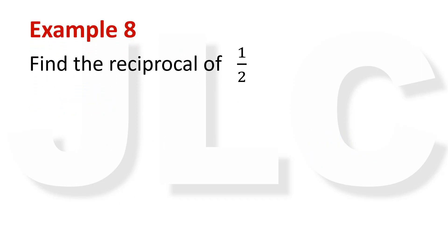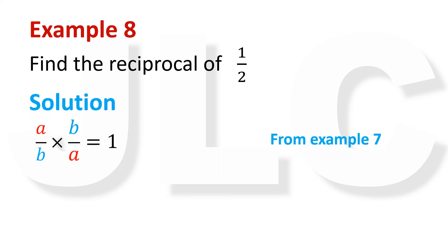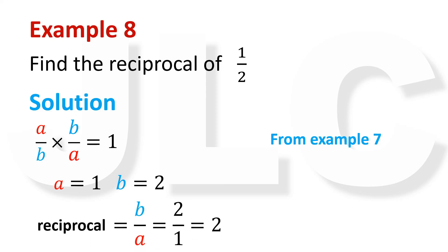Example 8: Find the reciprocal of 1 half. From example 7, we know that A over B times B over A equals 1. Recall that the product of a number and its multiplicative inverse or reciprocal is 1. Therefore, the reciprocal of A over B is B over A. In this case, A equals 1 and B equals 2. So the reciprocal is B over A equals 2 over 1 equals 2.